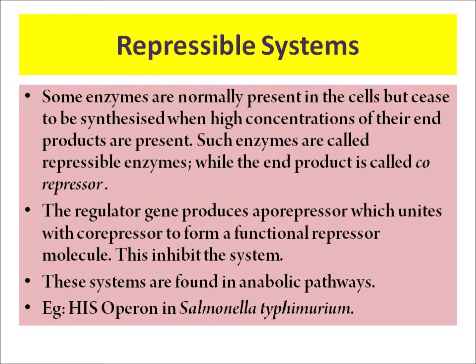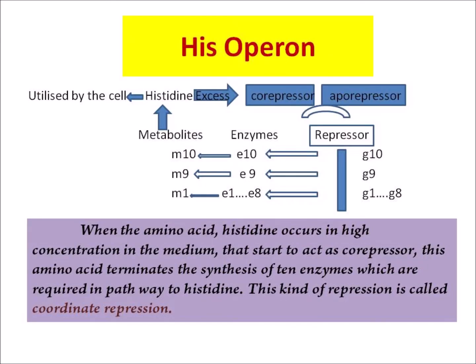An example is the histidine operon in Salmonella typhimurium. In this histidine operon, 10 genes produce 10 enzymes, and these 10 enzymes catalyze and produce 10 metabolites which help to form histidine. When the amino acid histidine occurs in high concentration in the medium, it acts as a corepressor, terminating the synthesis of 10 enzymes required in the pathway to histidine. This kind of repression is called coordinate repression.